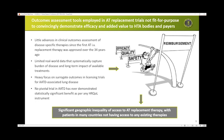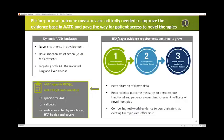Consequently, augmentation therapy has not met reimbursement hurdles in many ex-US countries, resulting in significant geographic inequality of access to replacement therapy. Patients in many countries do not currently have access to any specific therapy. This is why we urgently need to improve the evidence base in alpha-1 by developing outcome measures, including PROs that are fit for purpose to get patients access to treatment.